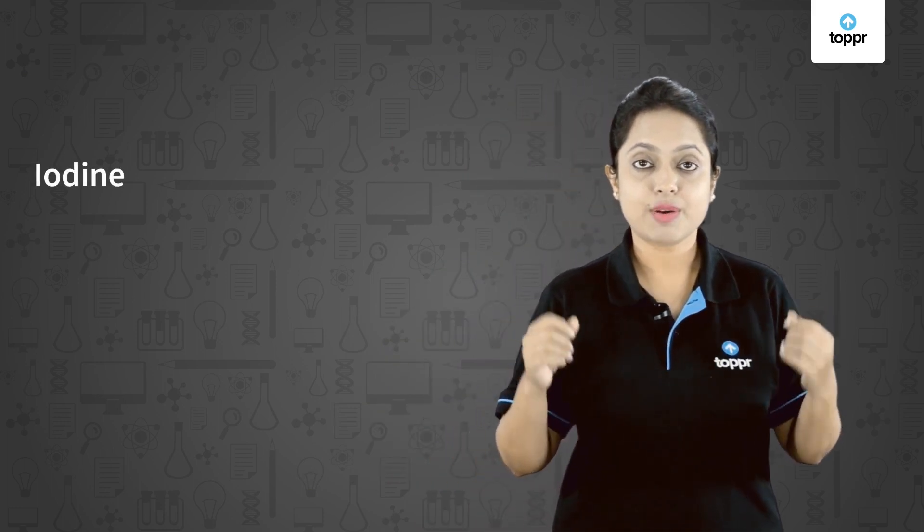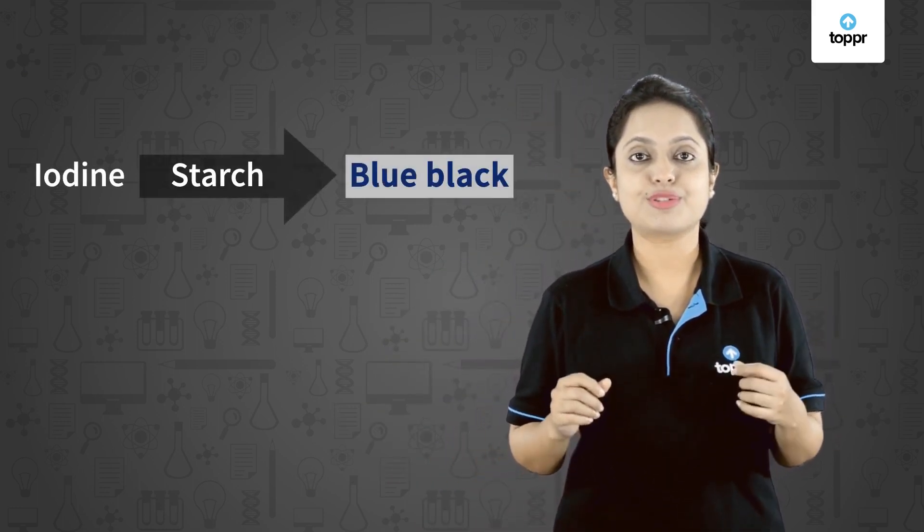We know that all plants synthesize their food by themselves through the process of photosynthesis. But they cannot utilize all this food at once, so they store it in the form of starch. So if we want to see that a plant has photosynthesized, we can check this with the presence of starch. In these experiments, we will use iodine solution to confirm the presence of starch, as iodine solution turns blue-black in the presence of starch.